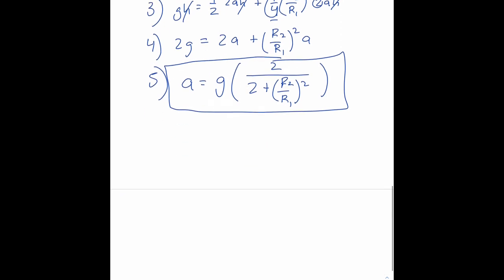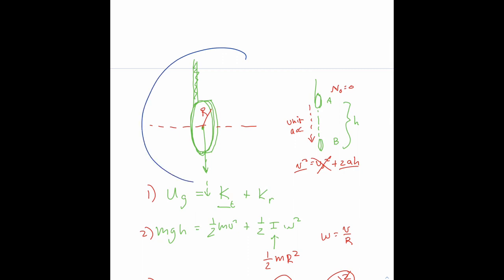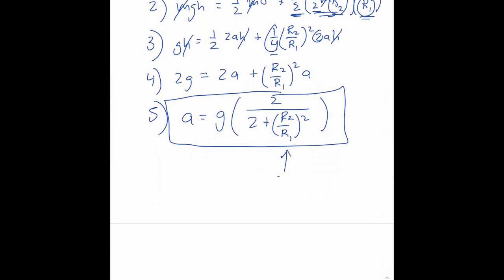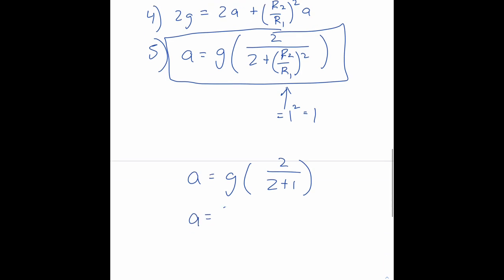And let's just double-check and see if it agrees with the simplified version of Maxwell's wheel. In other words, this is a case where r2, the radius of the wheel, is the radius around which the string is wrapped, so there's no distinction between r2 and r1. They're equal. When r2 equals r1, this quantity is just equal to 1. 1 squared would be equal to 1. So we would have a equals g times 2 over 2 plus 1. In other words, a would be equal to two-thirds of g, which matches up. Pretty neat. Thank you.